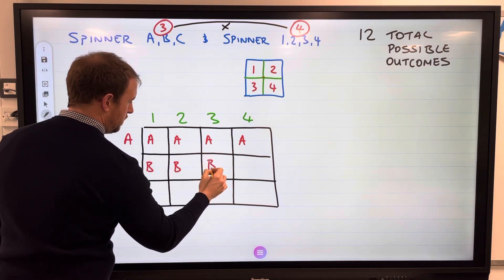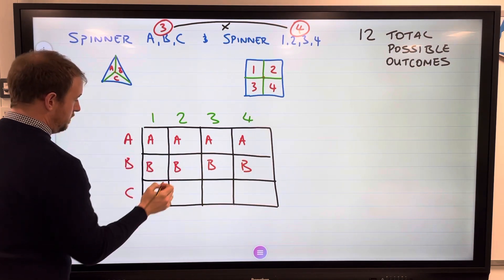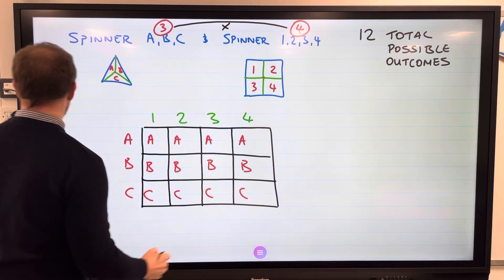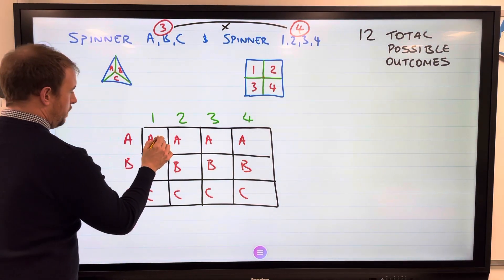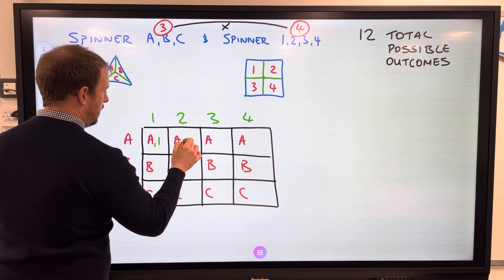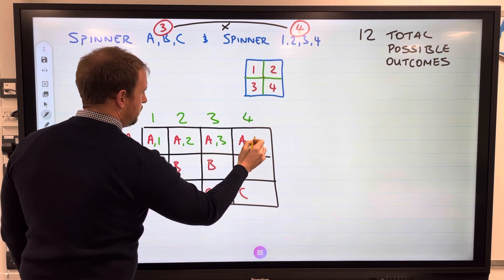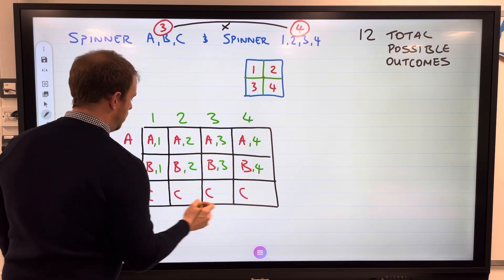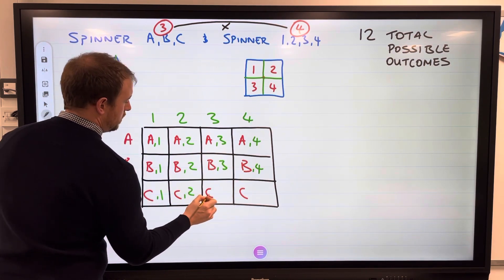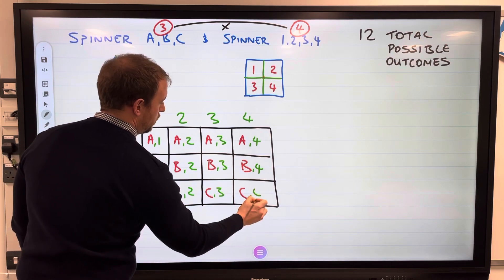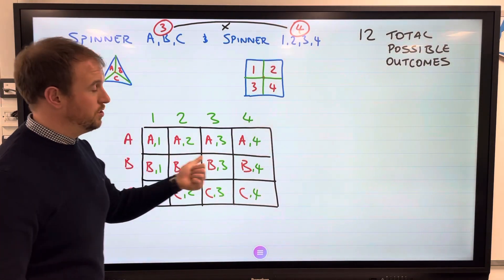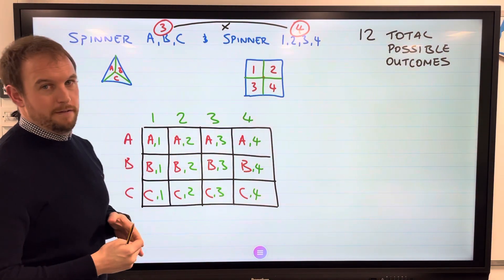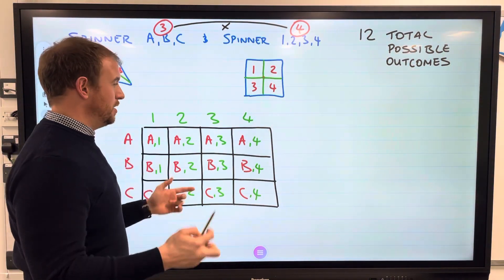All of these are going to be A's. I've used colors to represent certain spinners - I'm going to use red here for the spinner on the letters and green then for the numbers. I've got A1, A2, A3, A4, B1, B2, B3, B4, C1, C2, C3, C4. Again, one or two marks just for filling in the table.